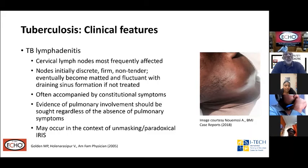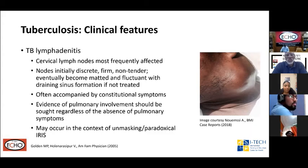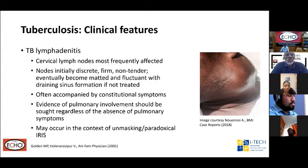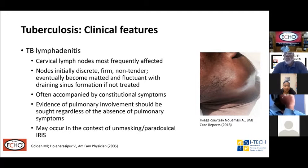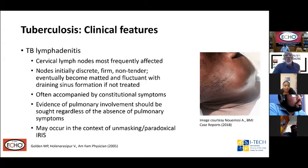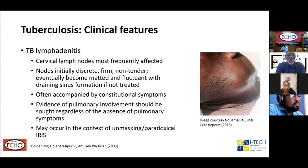TB lymphadenitis is one of the most common forms of extra-pulmonary TB. Cervical lymphadenitis — the glands of the neck — are most commonly affected. The nodes initially are discrete, firm, and non-tender, but eventually become matted and fluctuant with draining sinus formation if not appropriately treated. It is often accompanied by constitutional symptoms. Despite the absence of pulmonary signs, a presentation with extra-pulmonary TB should prompt a search for underlying pulmonary TB as well. It may also occur in the context of unmasking or paradoxical IRIS — someone with TB who starts antiretroviral therapy and suddenly a gland appears and starts to discharge, evidence that TB was there all along.